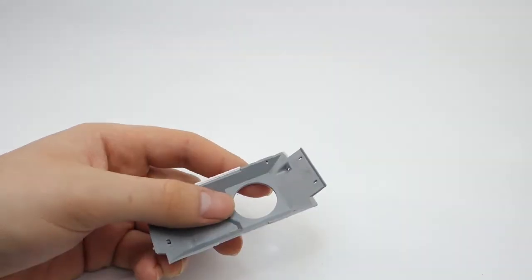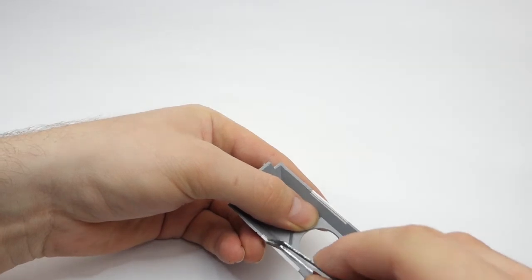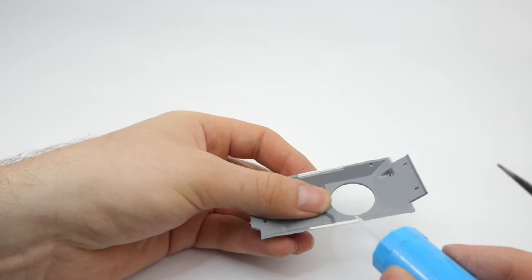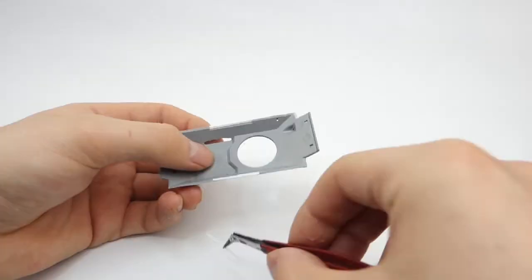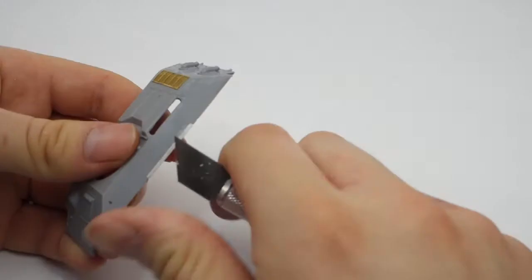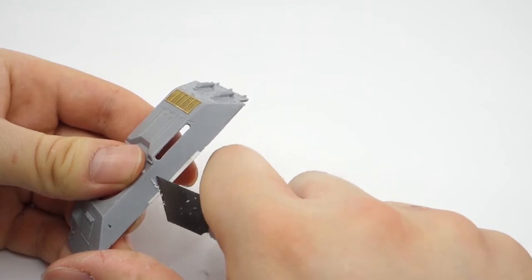After that I use some 0.5 mm plastic strips to hide those gaps in the side armor. The protruding plastic is removed with a hobby knife.